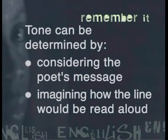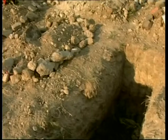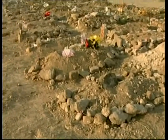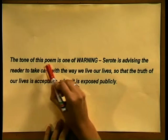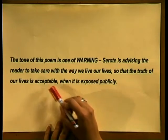For example, think about how you would read the last stanza aloud: 'Each of us will answer when the worms dig in and out of us for the truth, below the earth.' The tone of this poem is one of warning. Serote is advising the reader to take care with the way we live our lives, so that the truth of our lives is acceptable when it is exposed publicly. I hope you have enjoyed analysing this poem and have a clearer understanding of how to answer questions in your poetry tests or exams.